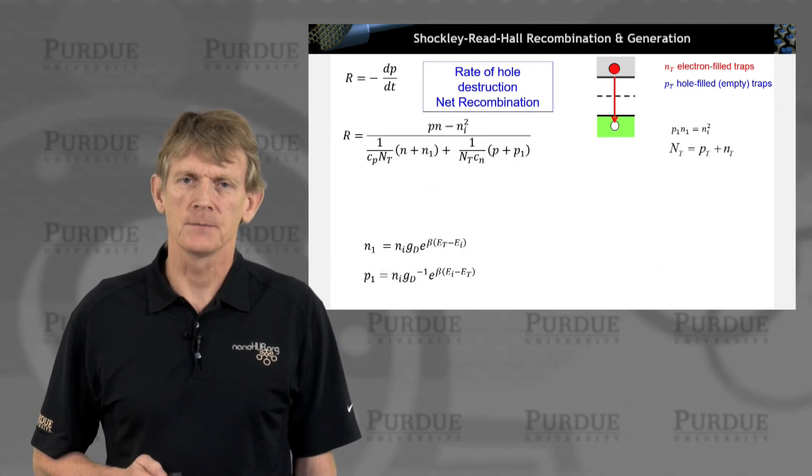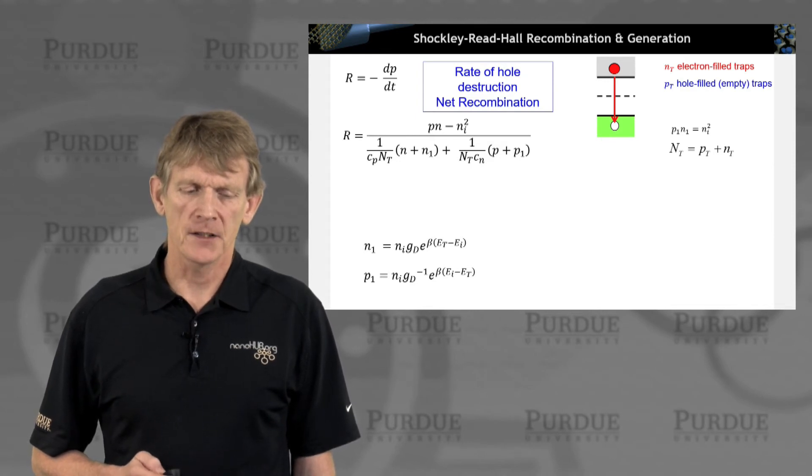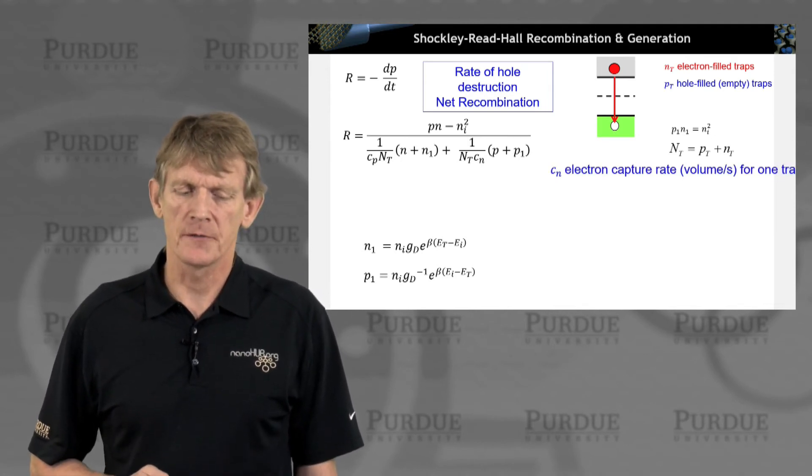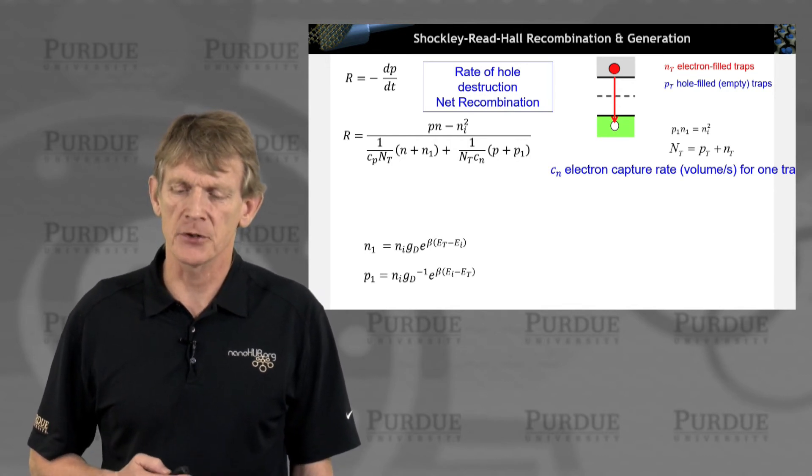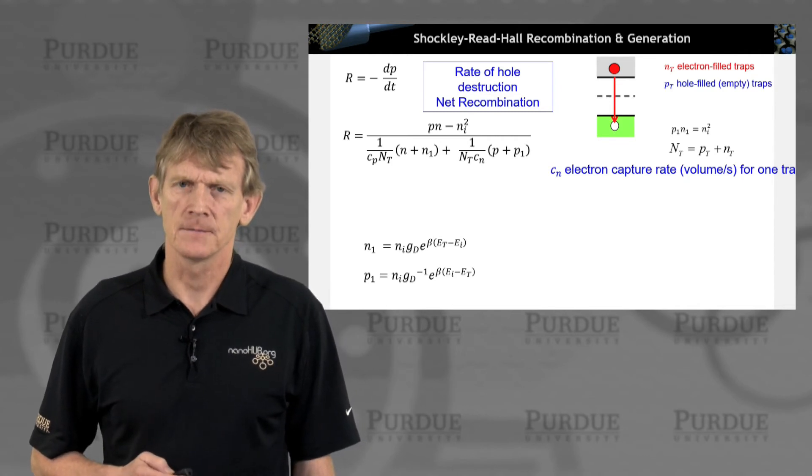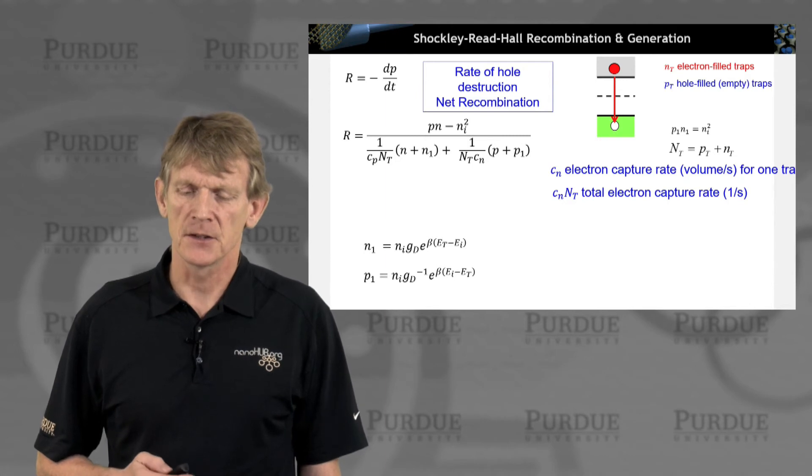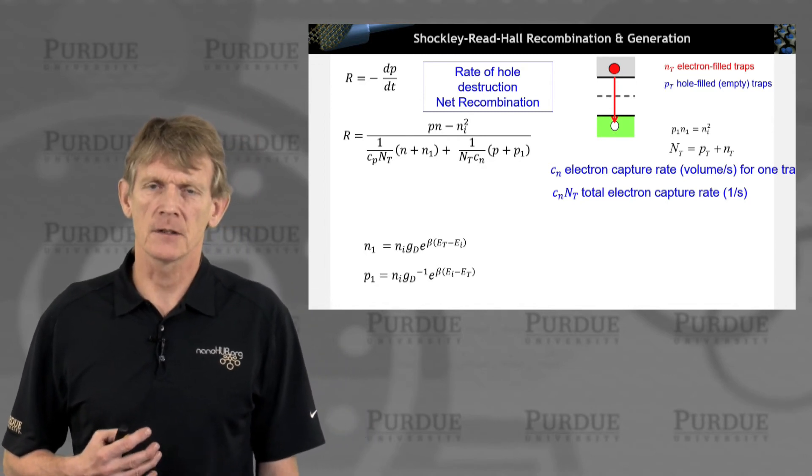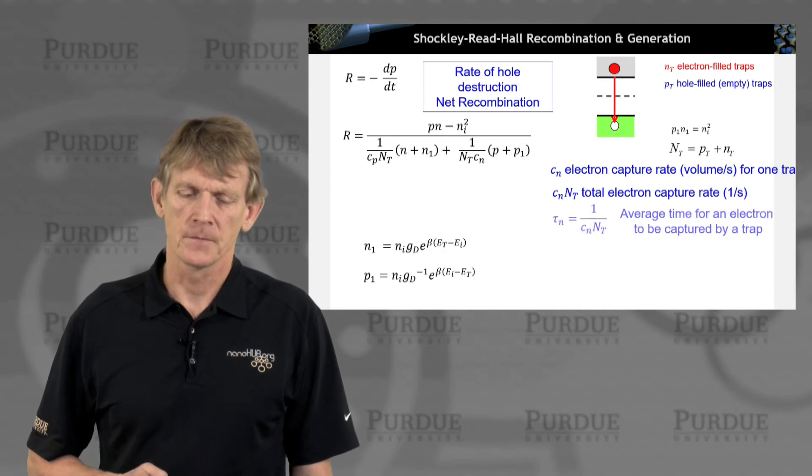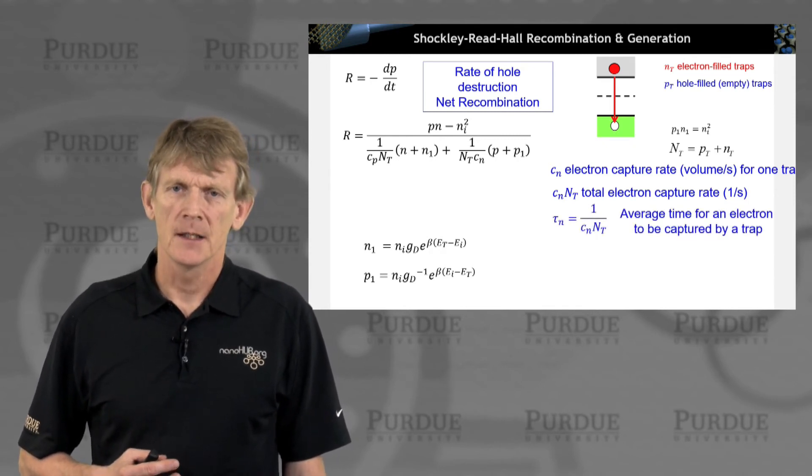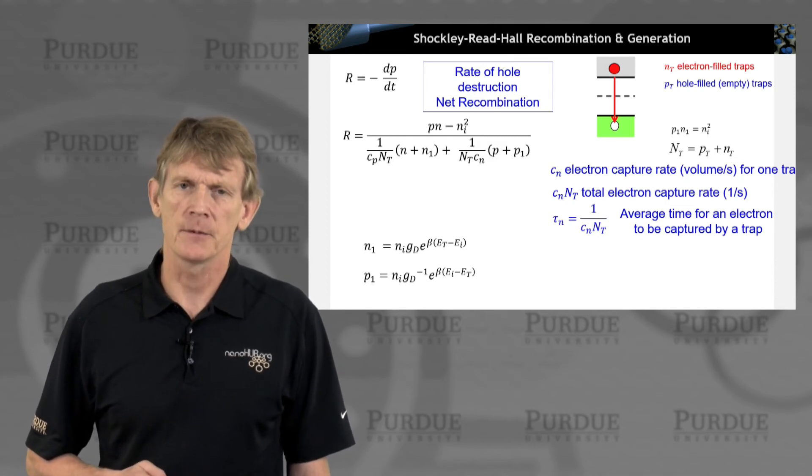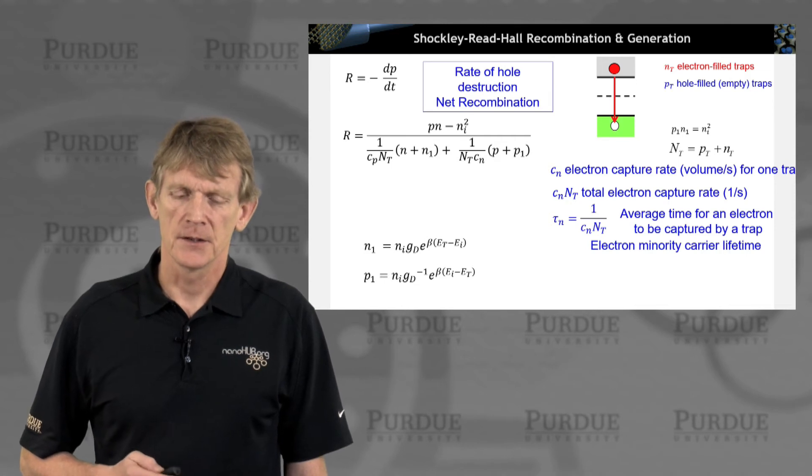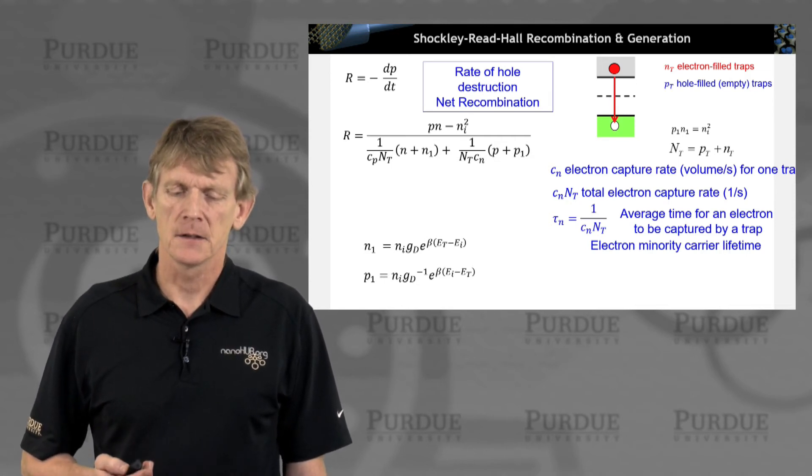Now, we're going to do a little bit more with this. We have expressions for N1 and P1. And we're going to look at the capture coefficients a little bit more carefully. Cn is the electron capture rate in terms of volumes per second. Now, Cn is the total capture rate per second. So that's the total number of electrons that are being caught per second. That's a rate. If we take the inverse of a rate, we get a time. That is the average time for an electron to be captured by a trap.